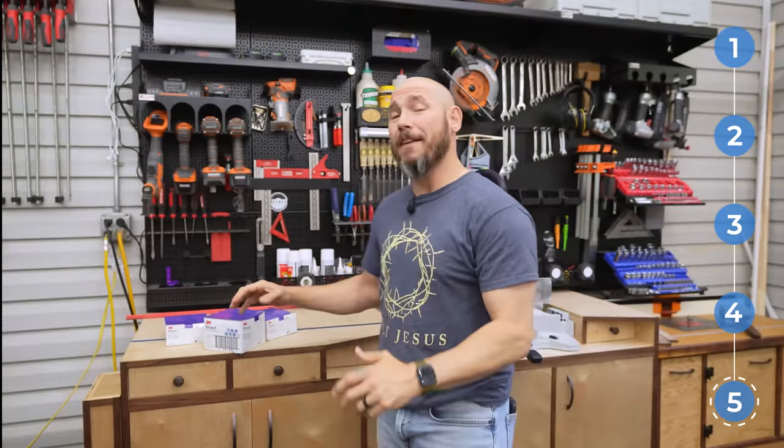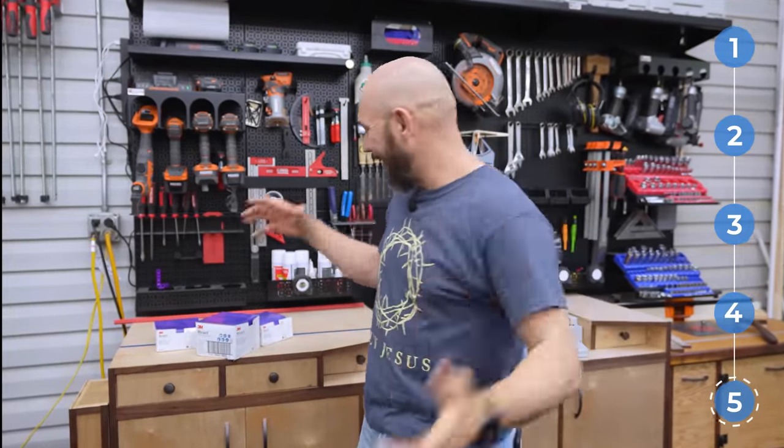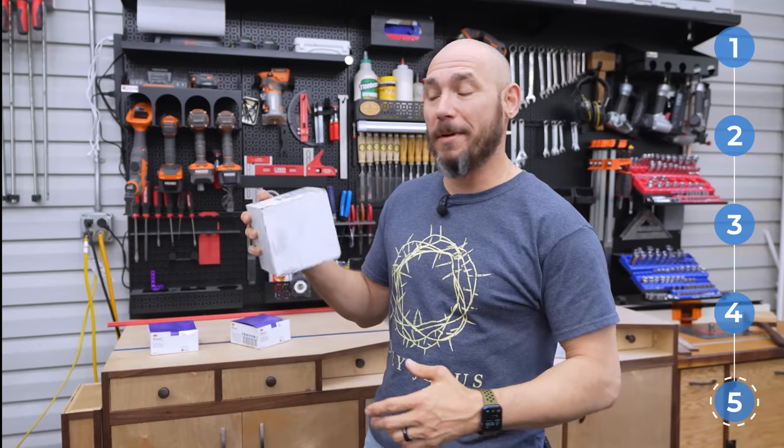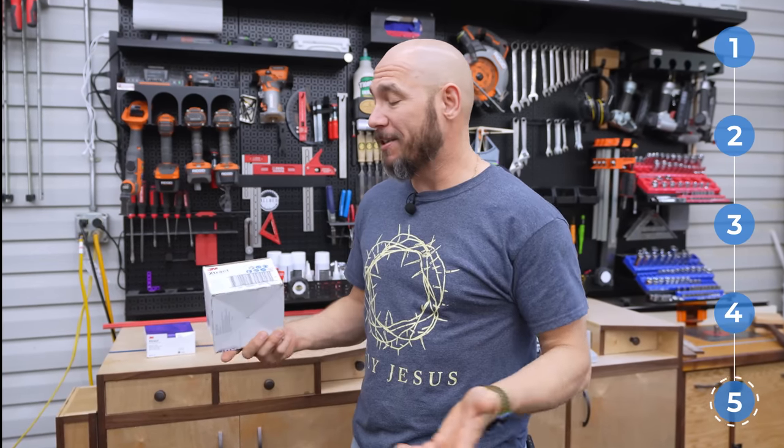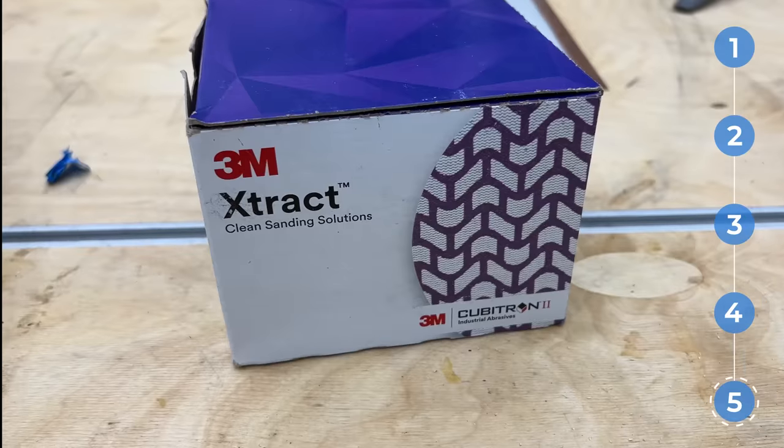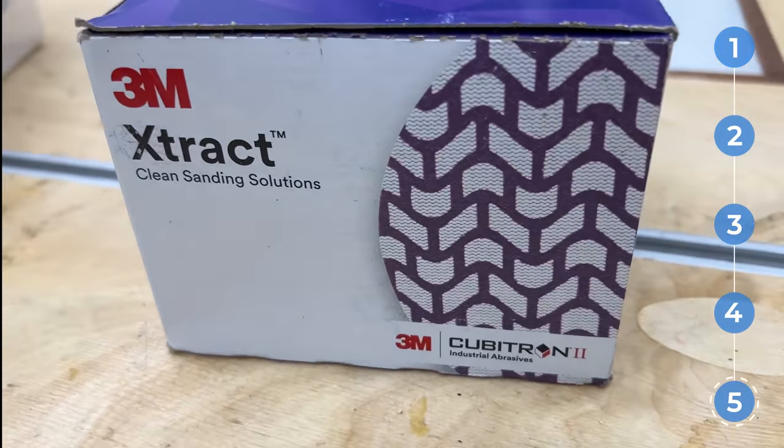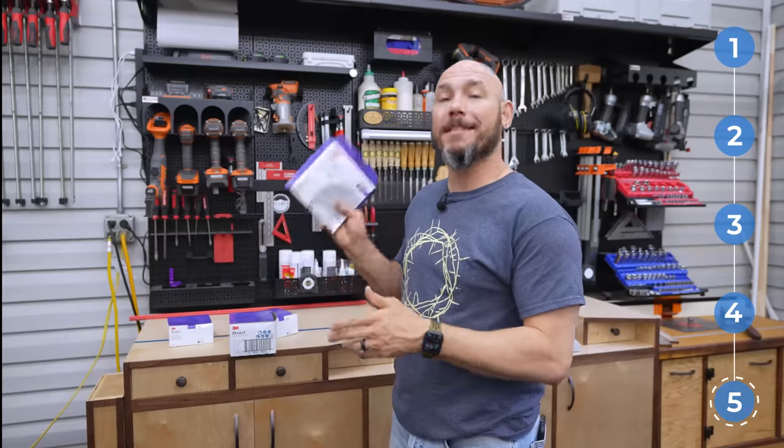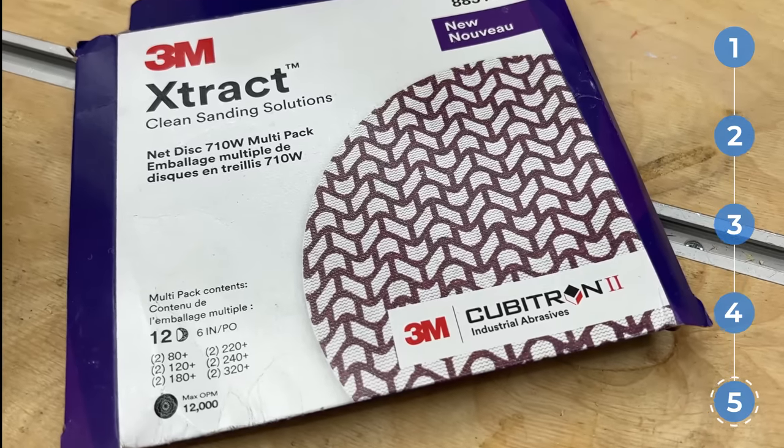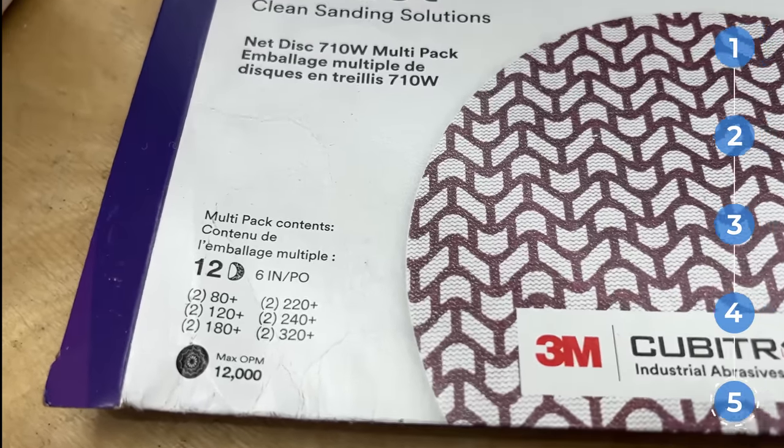Last but certainly not least, I've heard so much about this stuff I'm almost tired of hearing about it. But I had to pick up this 3M Xtract paper that everybody's talking about how amazing it is. It's less than $30 a pack for 50 discs in any grit that you're looking at, or you can pick up a sample pack like this that has 12 pieces of paper in there with varying grits. Let's see if it lives up to the hype.